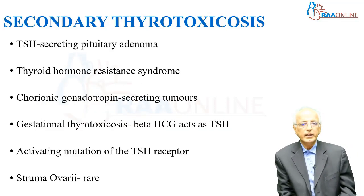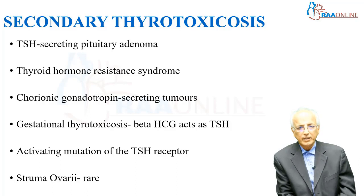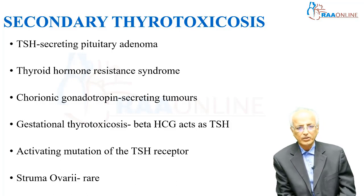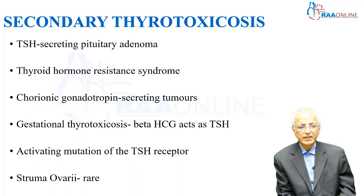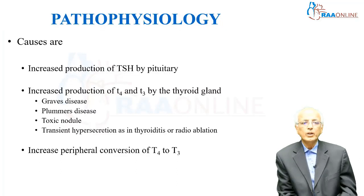Coming to secondary hyperthyroidism: any TSH-secreting pituitary adenoma can produce hyperthyroidism. There is also an entity called thyroid hormone resistance syndrome. Chronic gonadotrophin-secreting tumors — you have to remember that gonadotrophins act like TSH, so any disease which increases gonadotrophins, whether chorionic gonadotrophin or any other source, can create a situation like hyperthyroidism. Gestational thyrotoxicosis is where beta-HCG acts as a thyroid stimulating hormone. Struma ovarii, where ovarian dermoid tumors can have thyroid tissue that may secrete thyroid hormones and create a situation of hyperthyroidism.